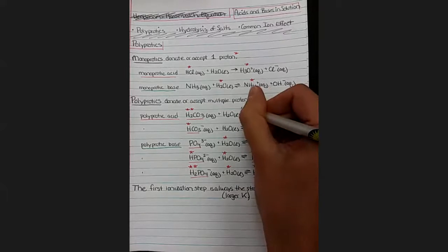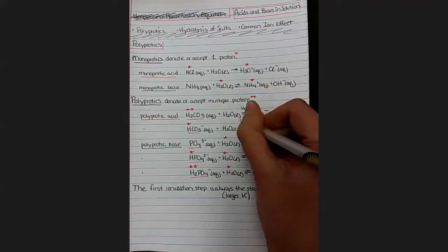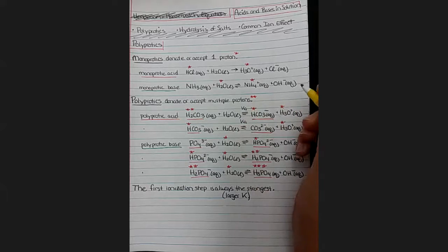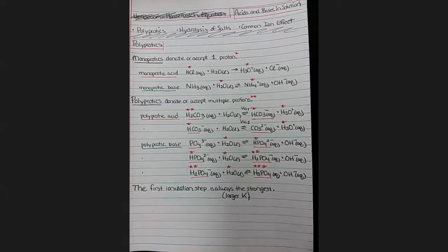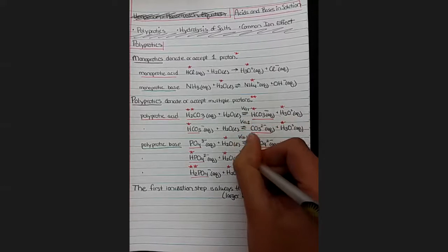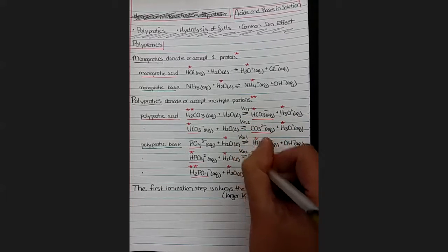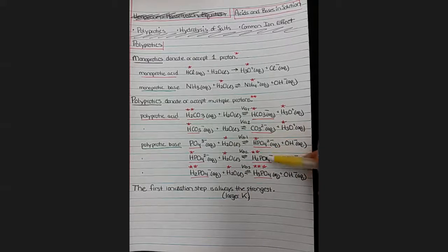So that's the first ionization step, meaning it has a larger K. So there's going to be a K for each of these steps. So there's going to be a KA for each of these acidic steps, and we'll number them starting from the first. So this one would be one, and this one would be two. And for the base, we have KB1, KB2, and KB3, as we add more and more protons to that compound.